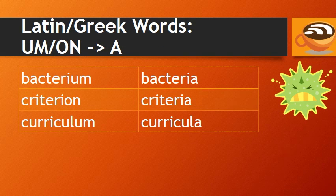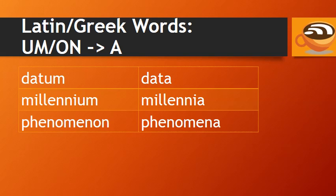We also have Latin or Greek words ending in -UM or -ON, whose plural forms end in -A. For example: one bacterium, many bacteria; criterion, criteria; curriculum, curricula; datum, data; millennium, millennia; phenomenon, phenomena.